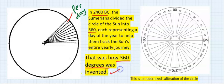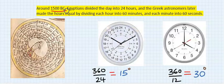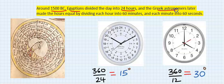This is a modernized calibration of the circle. Around 1500 BC, the Egyptians divided the day into 24 hours, and the Greek astronomers later made the hours whole by dividing each hour into 60 minutes and each minute into 60 seconds.